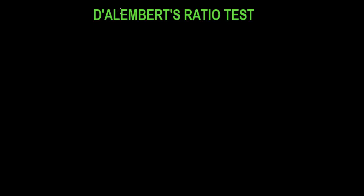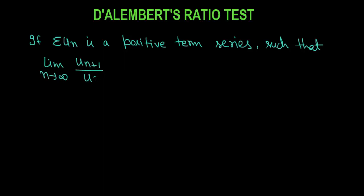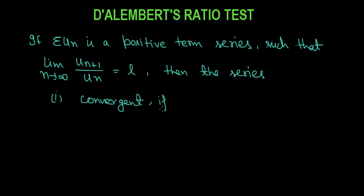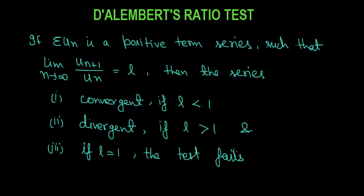The statement of this ratio test: for a positive term series sigma un, if the limit as n tends to infinity of un+1 upon un equals some value l, then the series is convergent if l is less than 1, divergent if l is greater than 1, and the test fails if l is equal to 1.